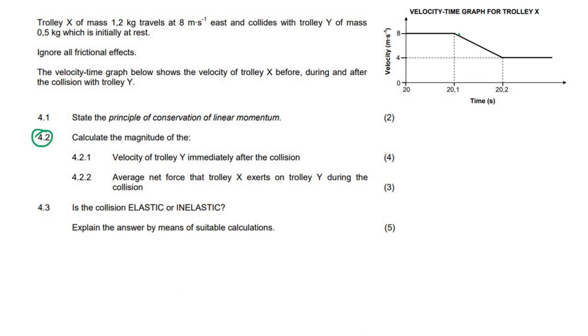This question says calculate the magnitude, so that means only the size, not the direction, of the velocity of Y immediately after the collision. Okay, so it's easy, you just say, we're going to use X initially plus Y initially equals to X final plus Y final. Then choose a direction as positive, I'm going to choose to the east as positive. So the X mass is 1.2. It's a very easy formula.